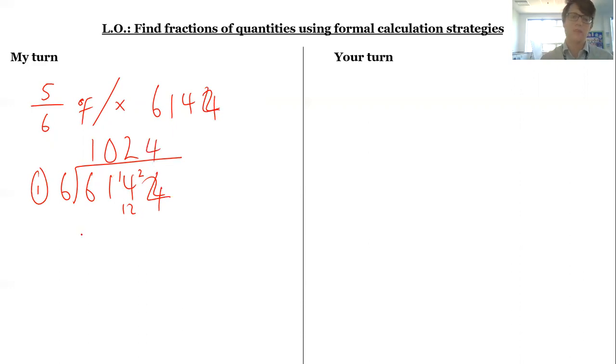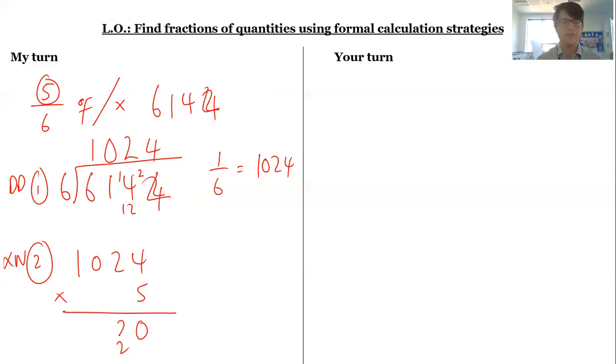6 goes into 24 four times, so I get 1,024. One-sixth is 1,024, but I don't want one-sixth, I need five-sixths. My next step: 1,024 times 5, which gives me 5,120.